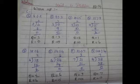Next, the 4th sum: 15 divided by 9. We need to say the 9 times table up to 15. In the 9 table, 15 never comes. 9 ones are 9, 9 twos are 18 — that is beyond our limit. So we write 1 times 9. Next, 15 minus 9 is 6. The quotient is 1 and the remainder is 6.